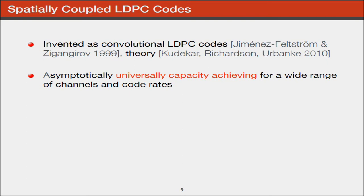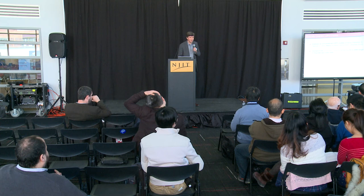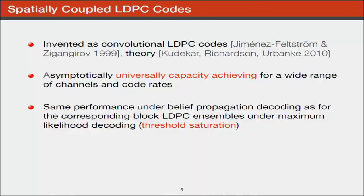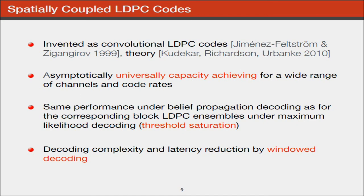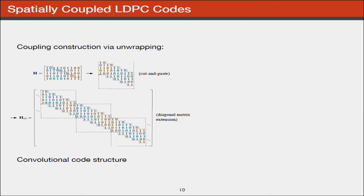These codes have very nice features. They are universally capacity achieving for a wide range of channels. If I design a code for one channel, I can use it for another channel without changing the design. They have threshold saturation, meaning they combine the best of both worlds - good threshold and no error floor. Decoding complexity can be very low with window decoding to reduce latency. This code is constructed using unwrapping. We take a block matrix, cut and paste it, and arrange these fractions on a diagonal. The code still has the same properties - three ones in each column and six ones in each row - but now it's a semi-infinite matrix with convolutional structure.